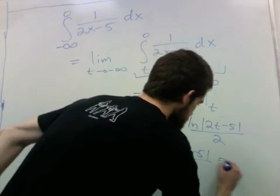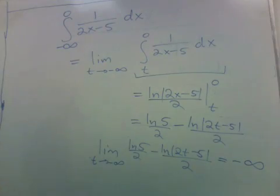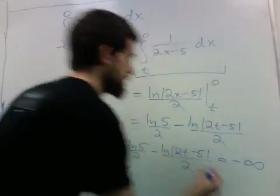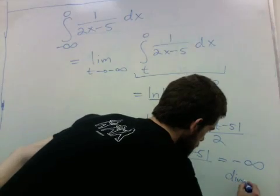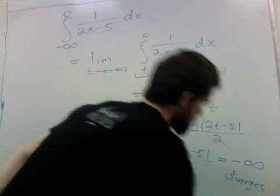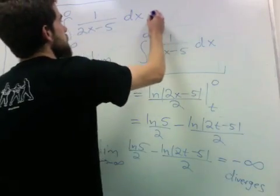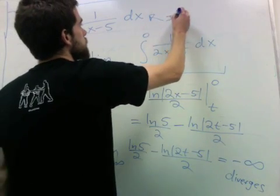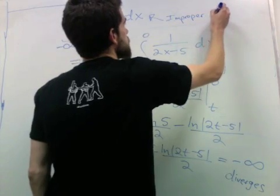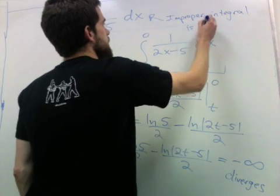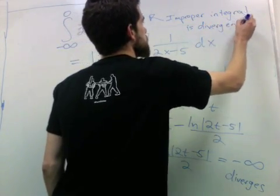So this goes to negative infinity, if you kept track of all the swappings of negative signs. And saying something goes to negative infinity is just another way of saying that it diverges in a certain sense. So the original improper integral is divergent. Yay!